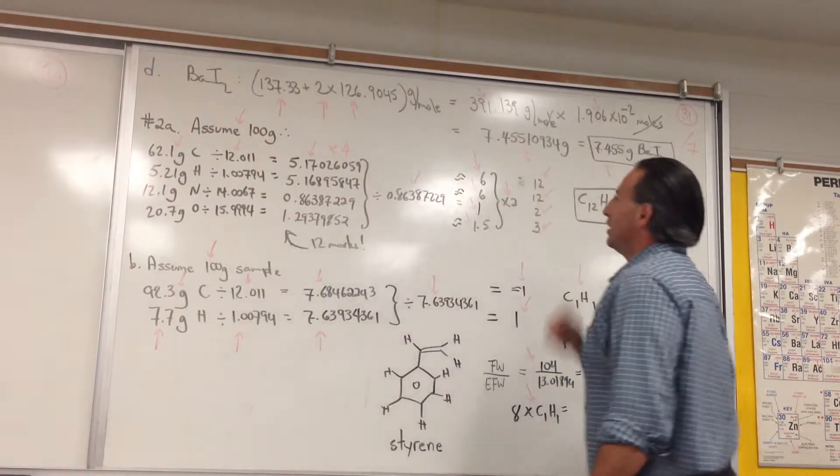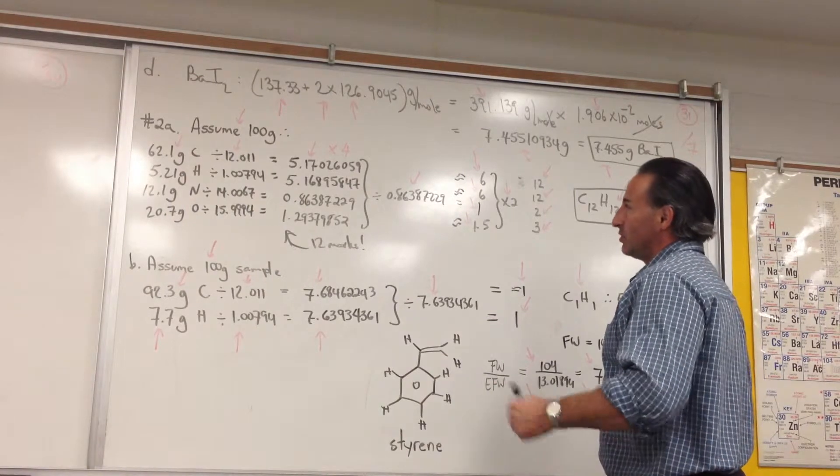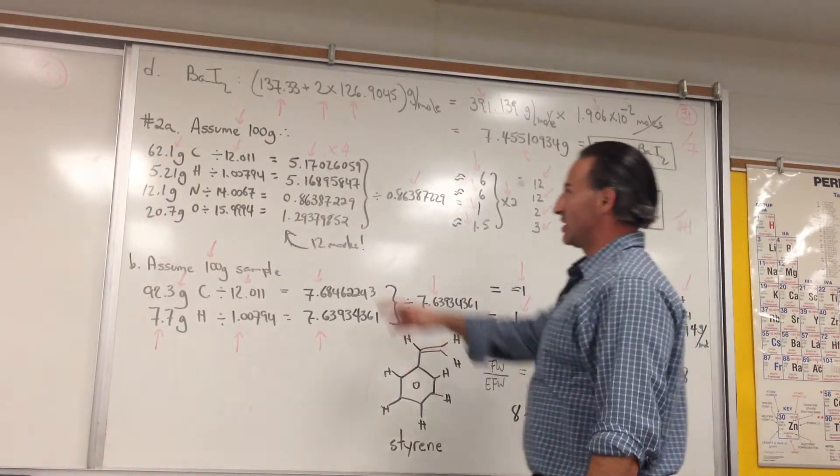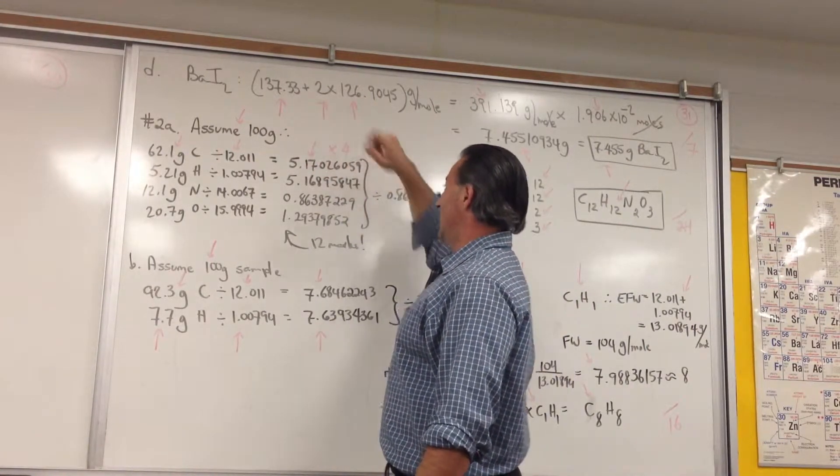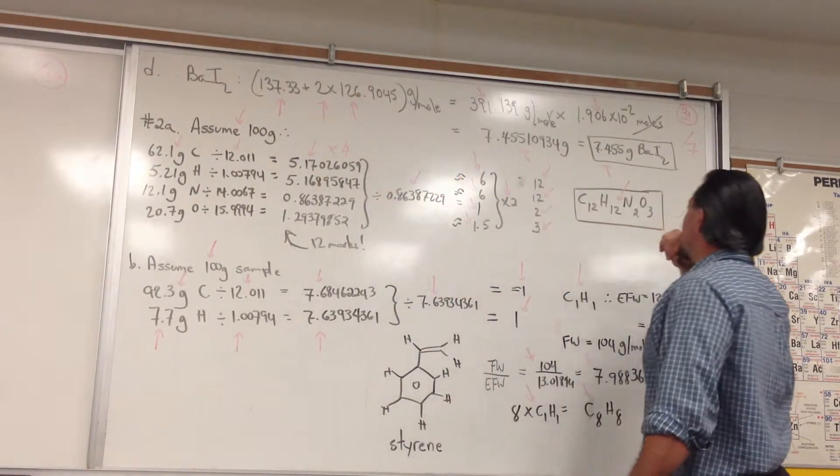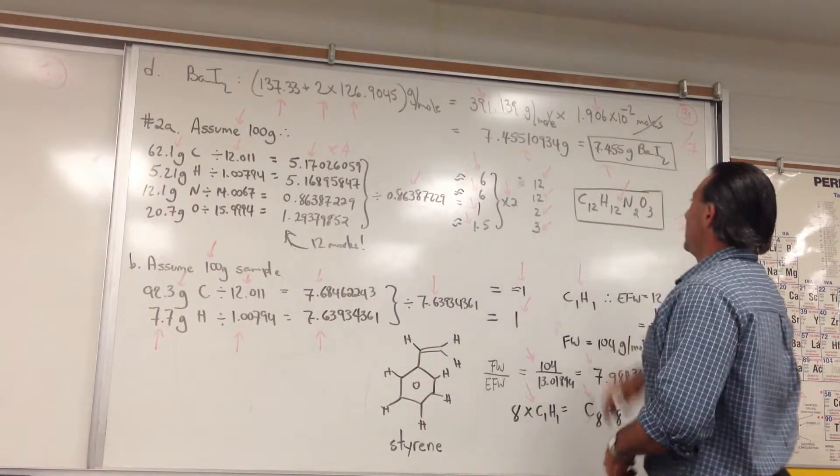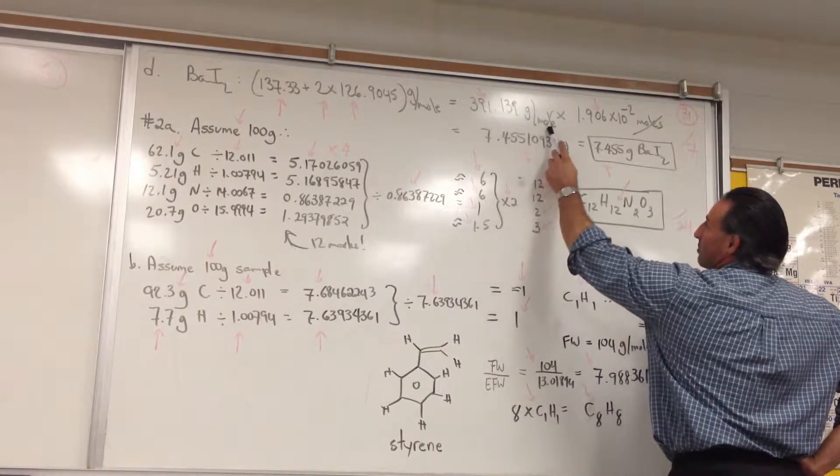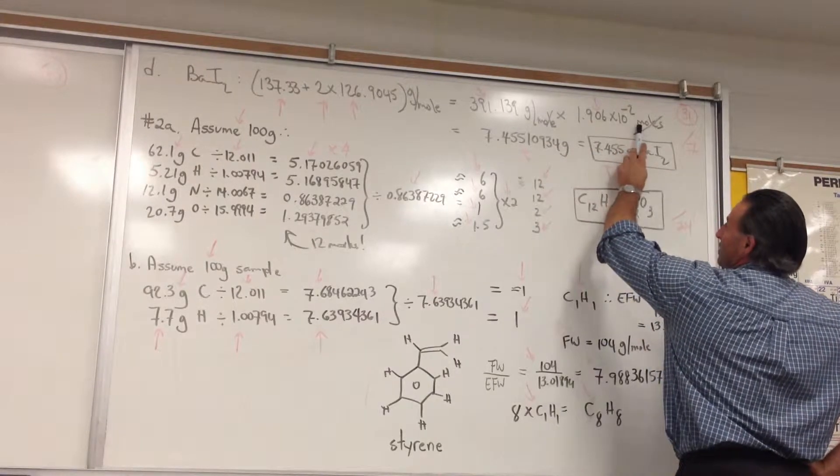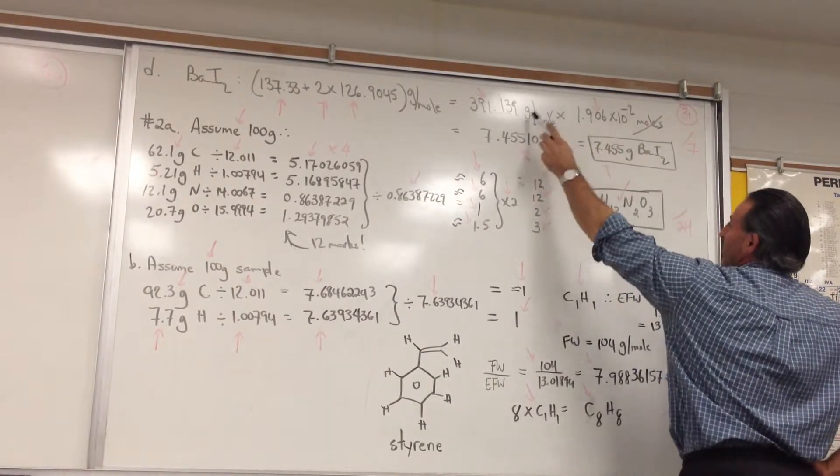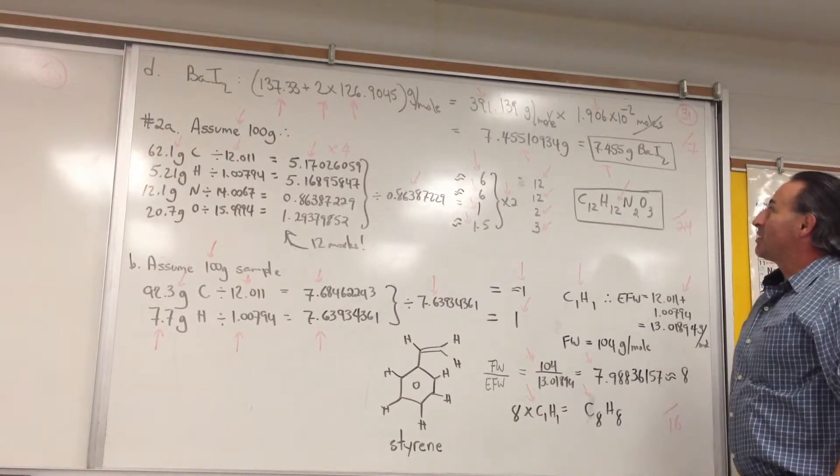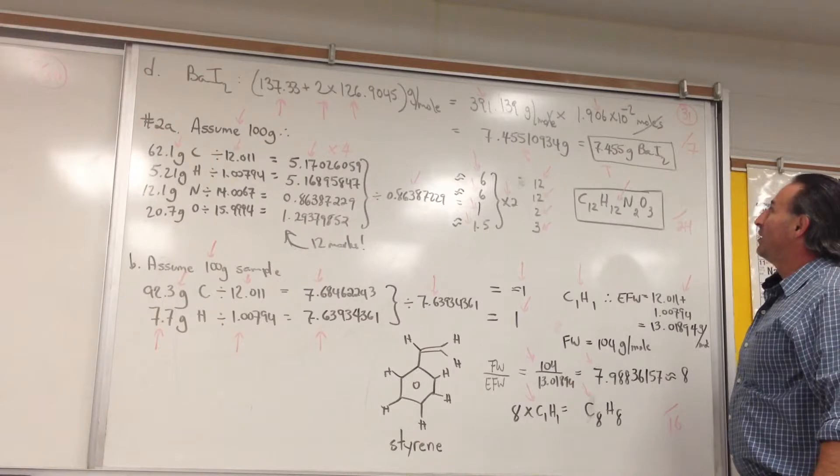Barium is plus 2, the iodide is minus 1, so you need 2 iodides to combine with the barium. The molar mass is 137 for the barium, 2 times 126 for the iodide, times the number of moles. You see how the units here give it away. The molar mass is grams per mole, and the number of moles is here. So, moles cancel. Your answer will have to be in grams. That's what we're looking for. The number of grams in 1.906 times 10 to the minus 2 moles of barium iodide.